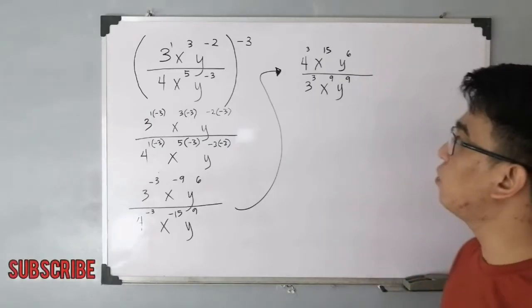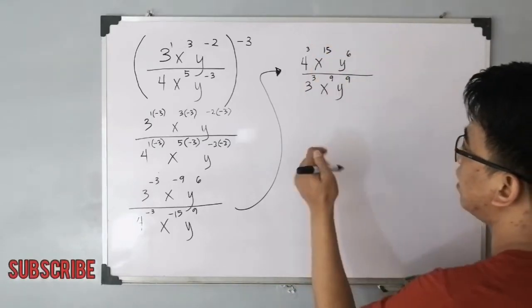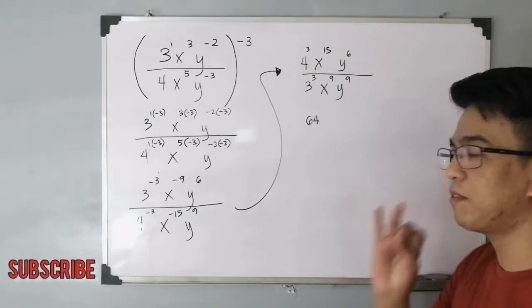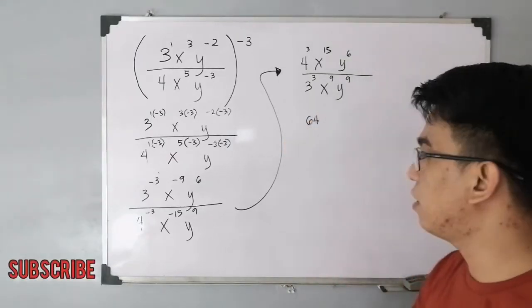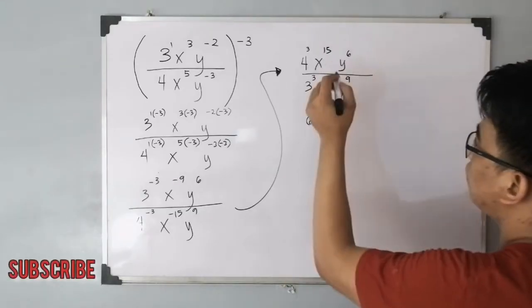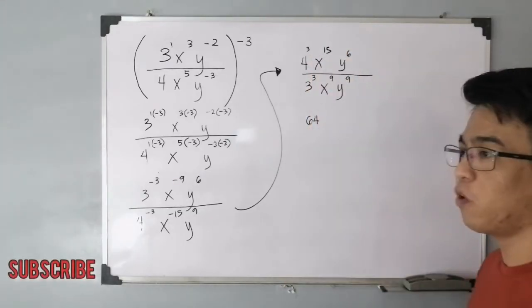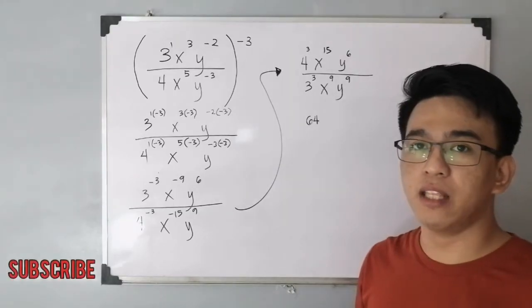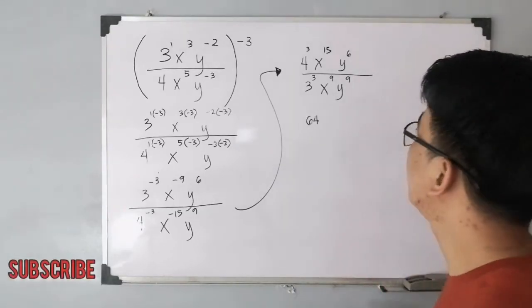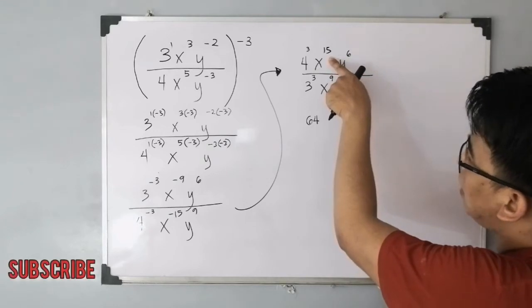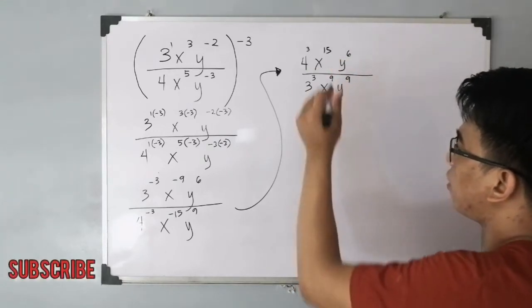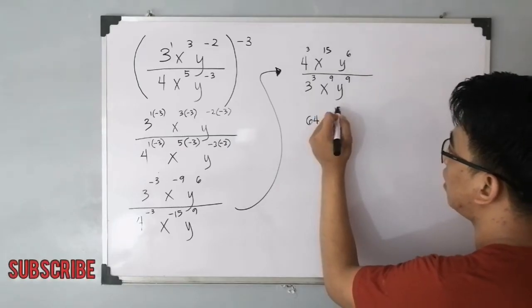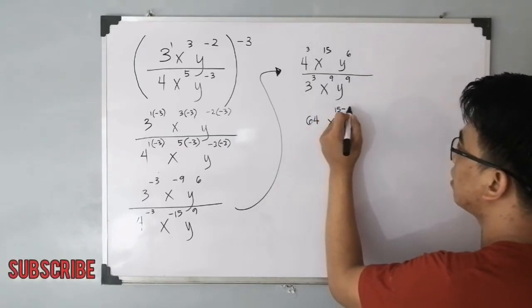And next step na natin solution, yung 4 raised to 3 natin is equivalent to 64. Kasi siya ay equivalent sa 4 times 4 times 4, 64. And then for the x variable or for the variables, we can apply quotient rule. Wherein we need to subtract exponents. Since mas mataas si 15 compared kay 9, sa numerator tayo mag-subtract. So it will become x raised to 15 minus 9.